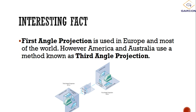There are two types or classifications of orthographic projection: first angle projection and third angle projection. First angle projection is used in Europe and most of the world; however, America and Australia use third angle projection. Third angle projection has a particular way to lay out the views that we'll be drawing.